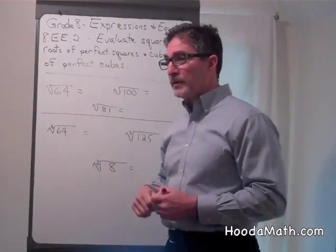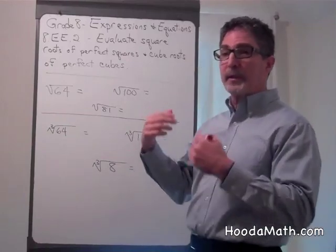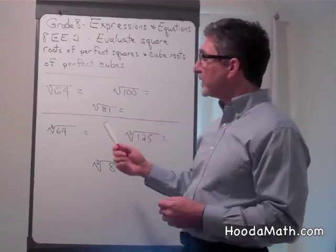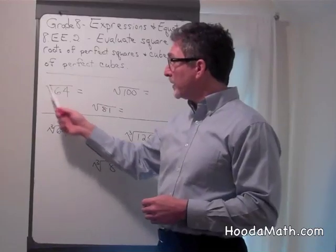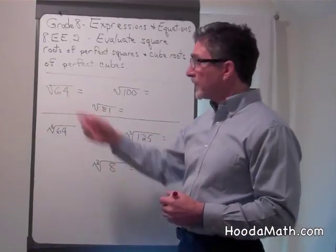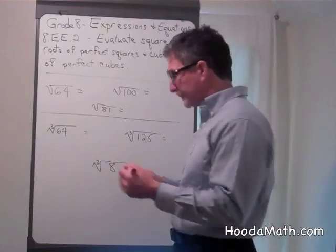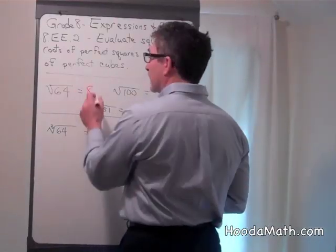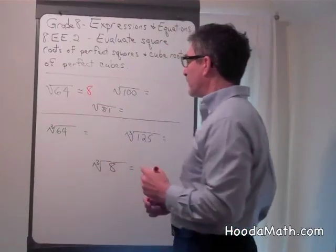Square root of a number means that there's a number that can be multiplied by itself to get the number under the square root symbol. So what times itself gives you 64? 8, because 8 times 8 equals 64.